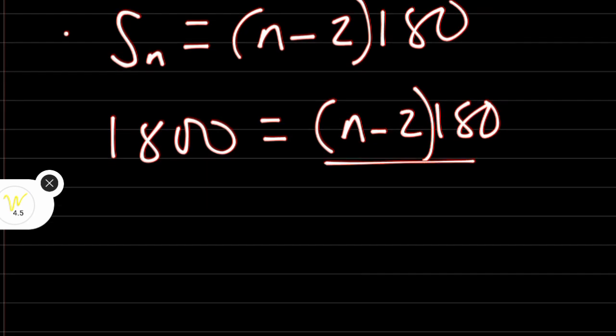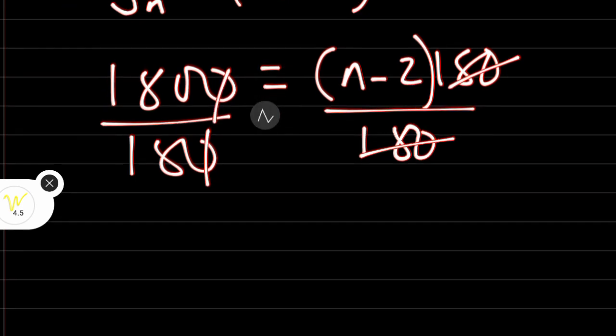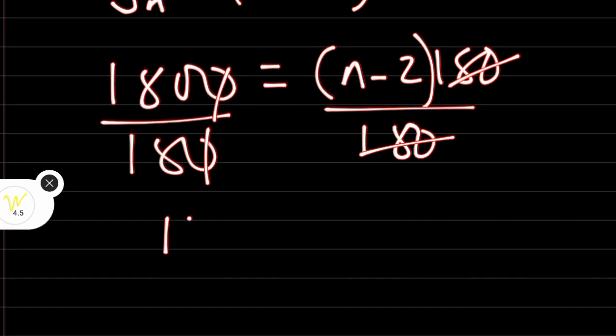Let's divide both sides by 180. 180 will cancel 180, zero will cancel zero here. 18 goes into 18 one time. 18 goes into zero zero times. 10 equals n minus 2.